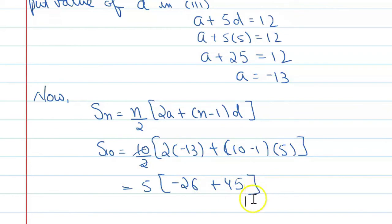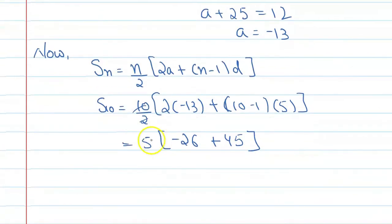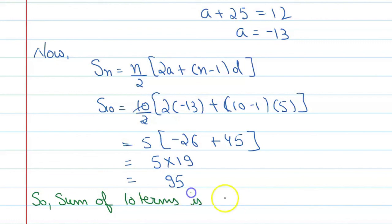Alright. If we solve this, then value will be 5 into (minus 26 plus 45). This will become 5 into 19, which equals 95. So, sum of 10 terms is 95.